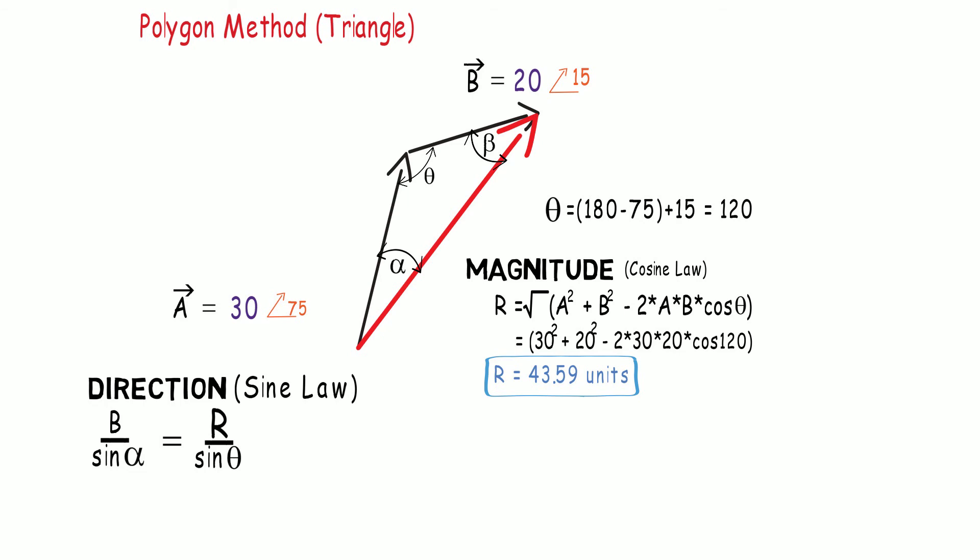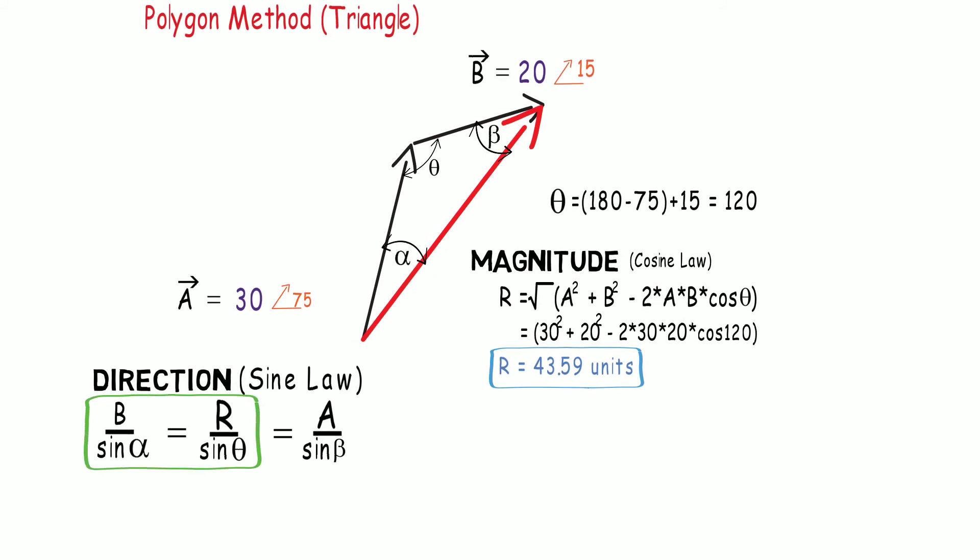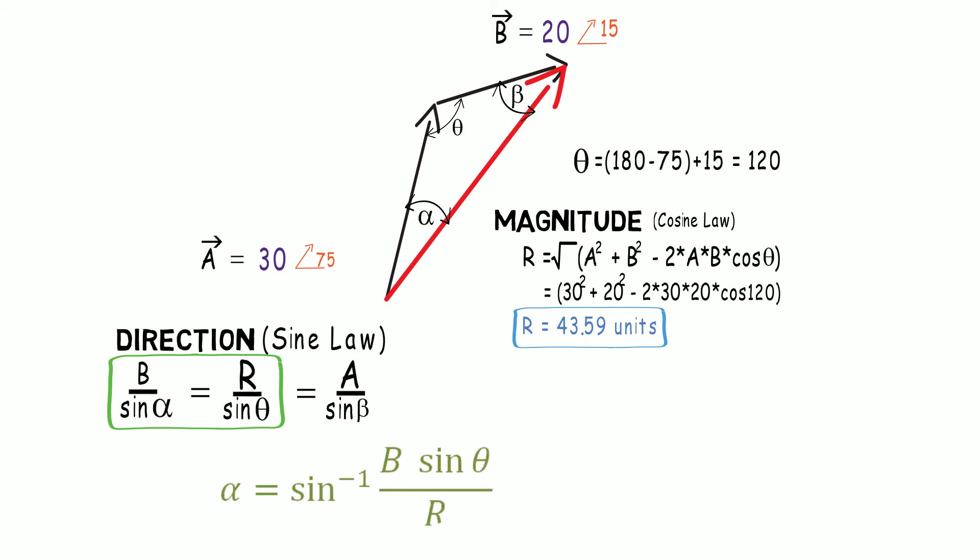Just in case you do not know the magnitude of R and you want to directly solve for alpha, then you can also equate to the ratio of vector A to sine of angle beta. In this case, we know that angle beta is equal to 180 degrees minus theta minus alpha. I will be using the first two ratios to solve for the values of alpha. That would give me alpha equals sine inverse of B sine theta upon R. Once substituting the values of B, theta, and R, I will be getting the value of alpha equals 23.41 degrees.